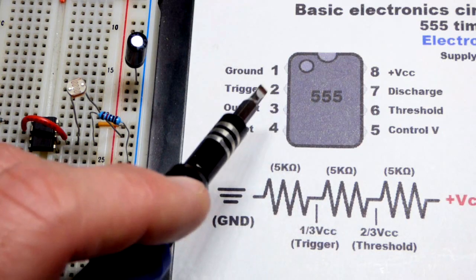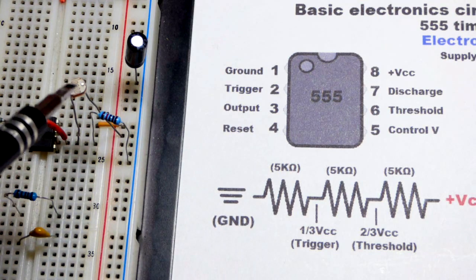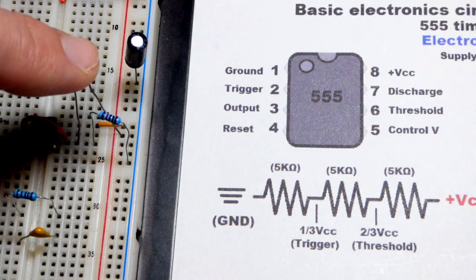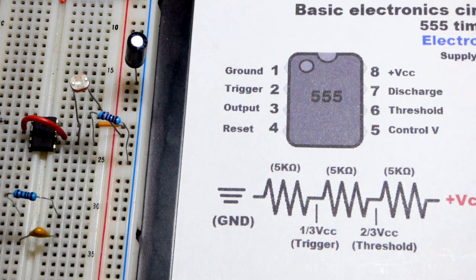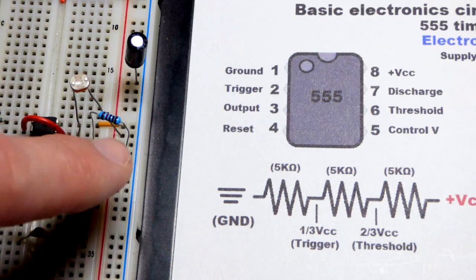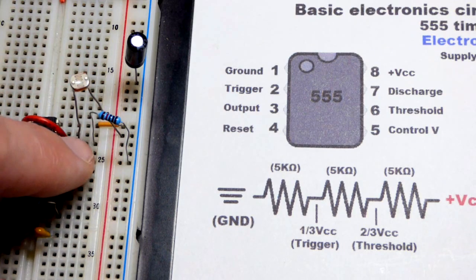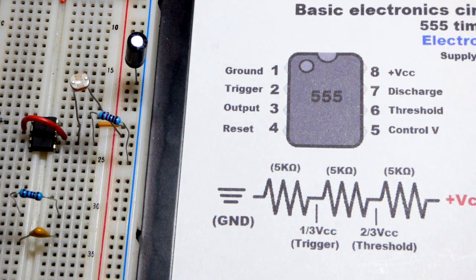The trigger pin is waiting for one-third of the power supply voltage. When it's really dark, we'll have tons of resistance at the light-dependent resistor. This is a 10 kilohm resistor. We can change the sensitivity by changing the resistor and also swapping which side they are on.